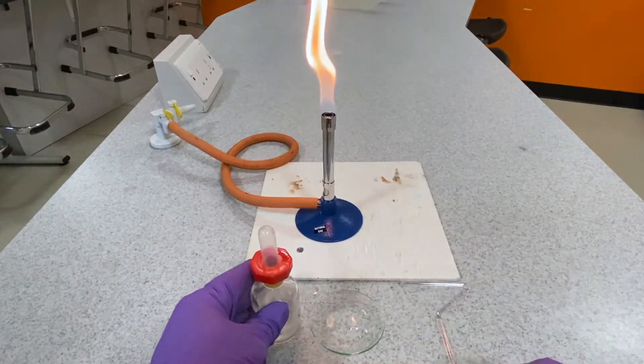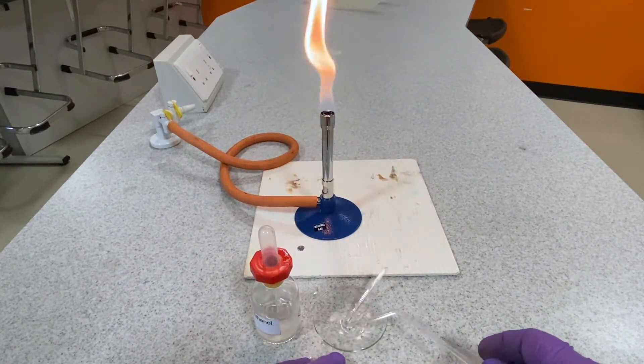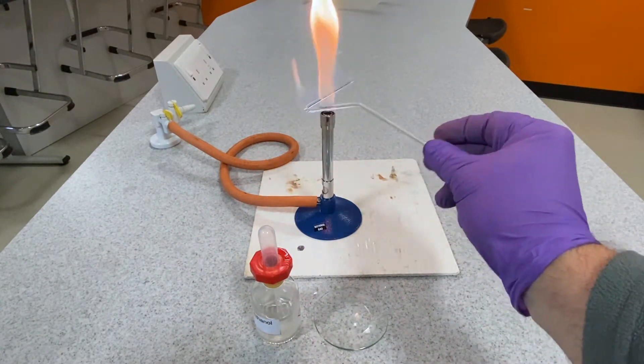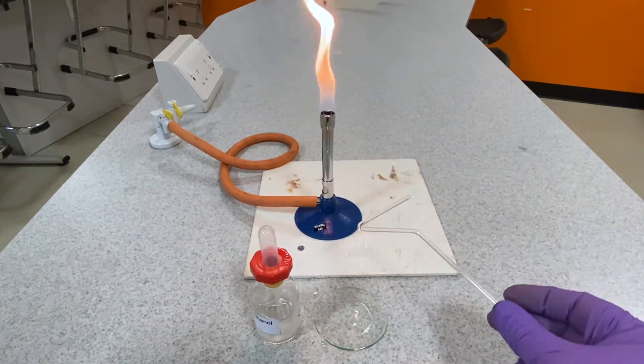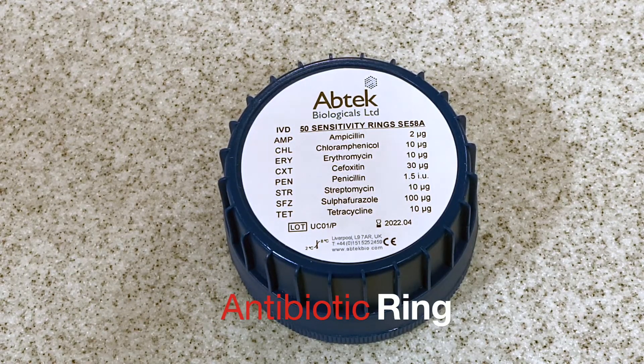As an alternative to the disposable spreader, a glass spreader can be used. This is sterilized in the following manner using ethanol and a watch glass. Once the glass spreader has been dipped in ethanol, it's passed through the Bunsen flame and the ethanol is burnt off, thus sterilizing the glass spreader.